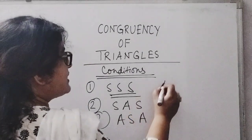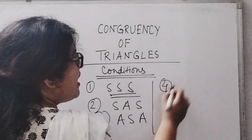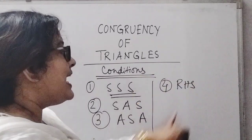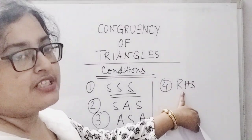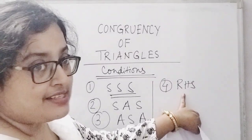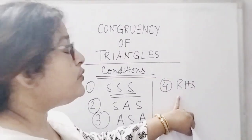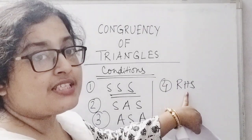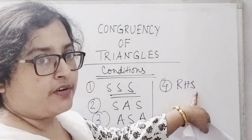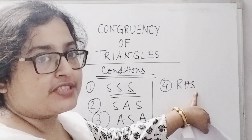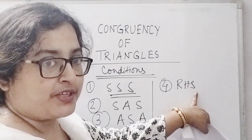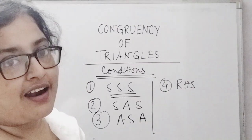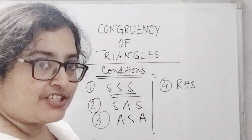And the fourth one is RHS. This type of congruency condition basically goes for right-angled triangles. If in two right-angled triangles you find that the measurements of the hypotenuse and any one of the other pairs of sides are equal in measurement, then you will conclude that they are congruent by RHS condition.